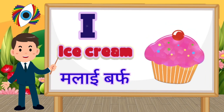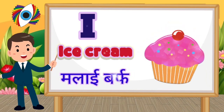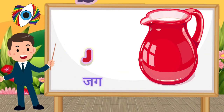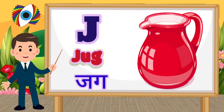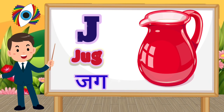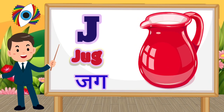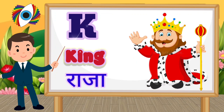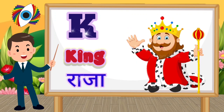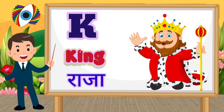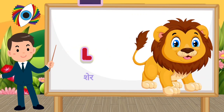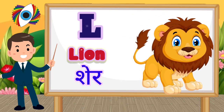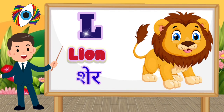I for Ice Cream. J for Jug. K for King. L for Lion.